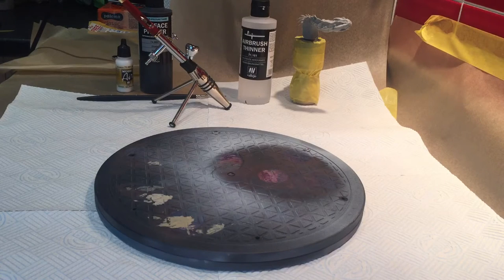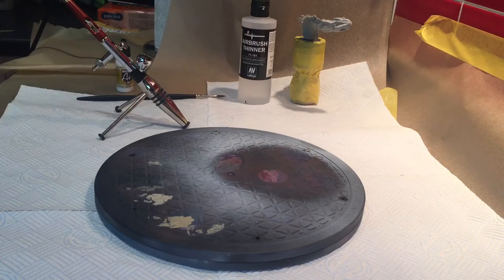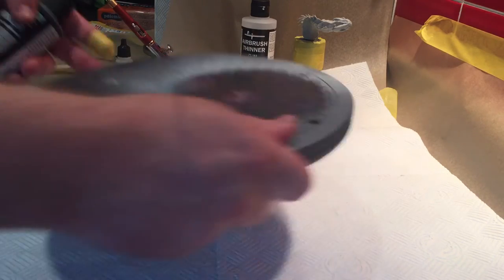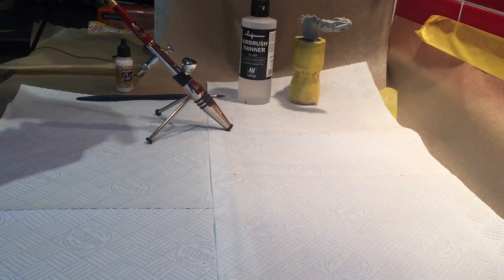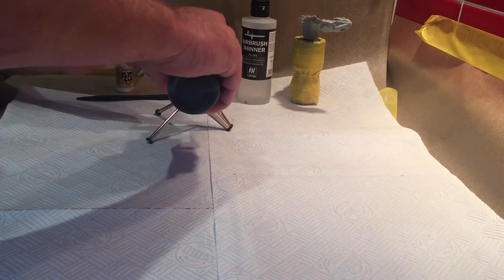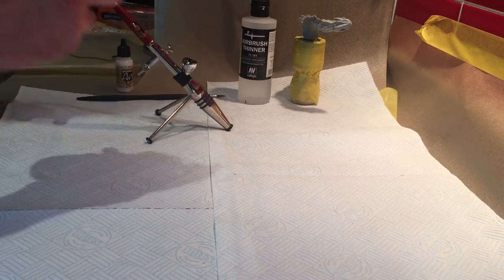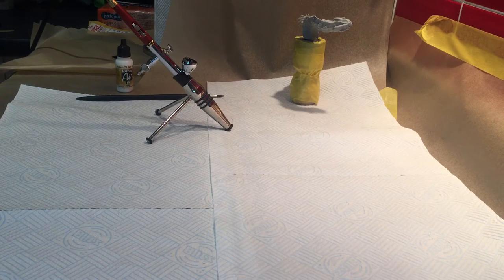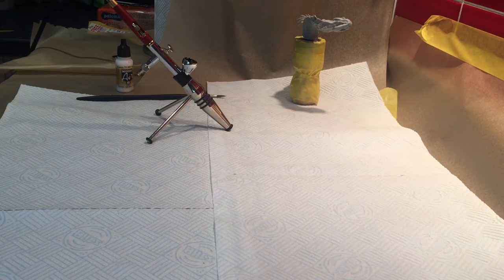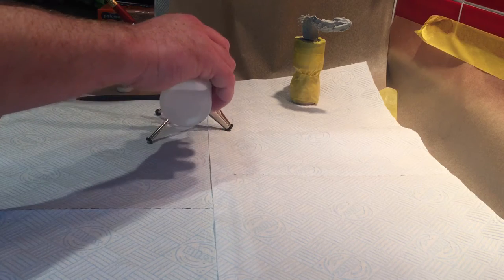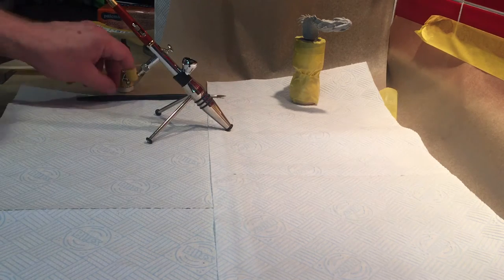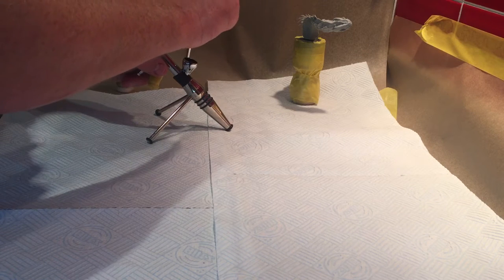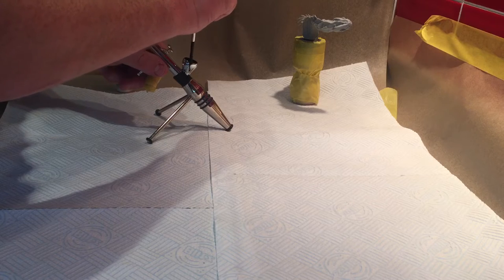Yesterday we covered off mixing paint and the right consistencies of paint. We're going to put some surface primer down. This is Vallejo airbrush surface primer. Most of the Vallejo stuff is supposed to be airbrush ready. I would strongly suggest that you still dilute any airbrush ready paints because just a little bit of thinner in there helps the viscosity and helps the airbrush to work properly.